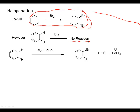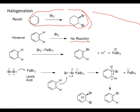Let's look at the mechanism for this reaction. What initially happens is a reaction between bromine and iron tribromide, forming a Lewis acid–Lewis base adduct right here. This is a much better electrophile than plain old bromine, and it's so much better that it can actually attack the benzene ring, generating the carbocation. Then H plus is lost rapidly to produce the product bromobenzene, shown here.